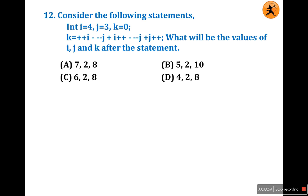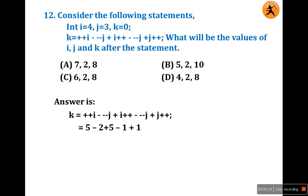The priority of pre-order increment operators is more than arithmetic operators. So we identify: ++i is a pre-increment of i; ---j is a pre-decrement of j (double minus); i++ is a post-increment of i; --j is a pre-decrement of j; j++ is a post-increment of j.